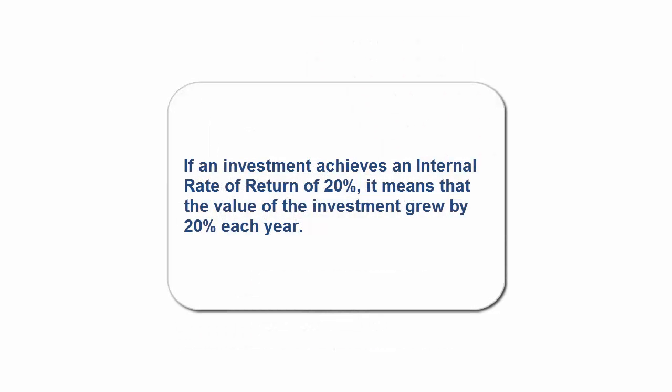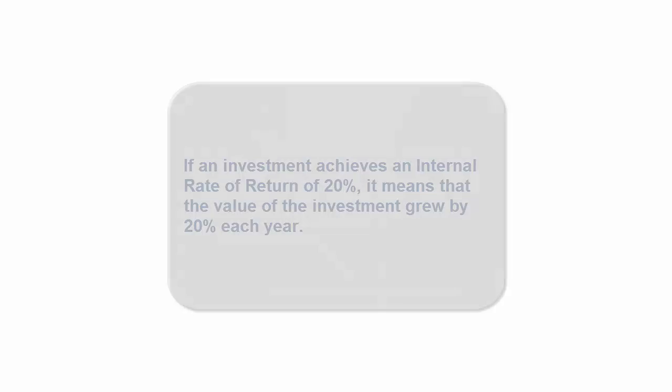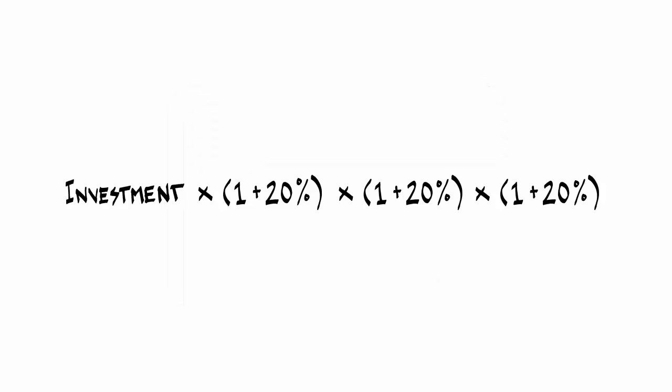But what if instead of this formula you were told that an IRR of 20% means that an investment grows by 20% each year instead. In other words, if an investment achieved an IRR of 20% over a three-year period, you could calculate the value of the investment at the end of three years as follows.